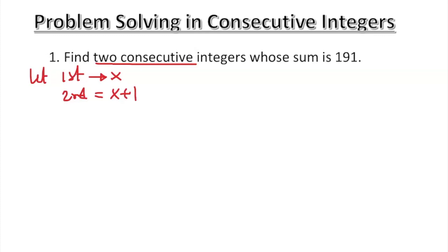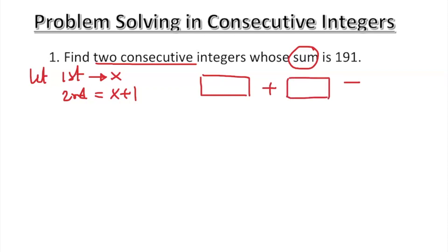Sum means you add — you add one number plus another number. And you set that equal to 191, because 'is' means equal. So the sum of the two integers equals 191.